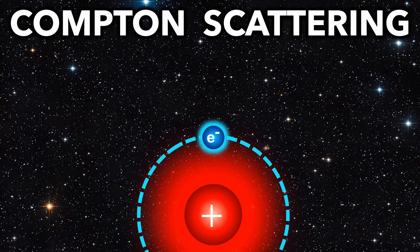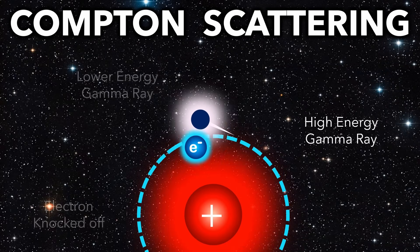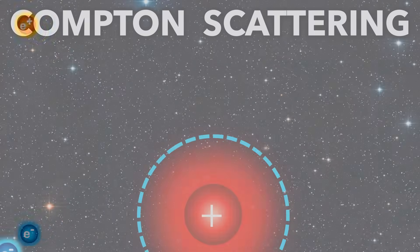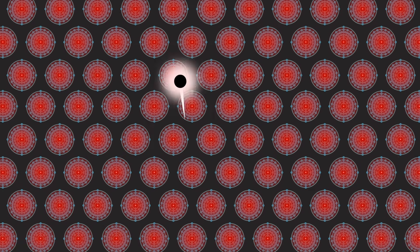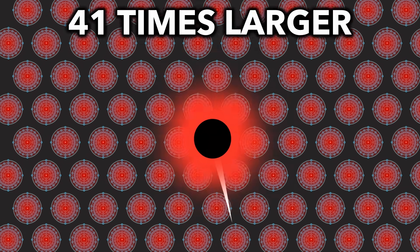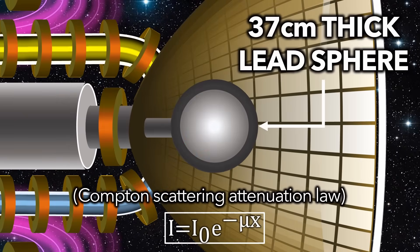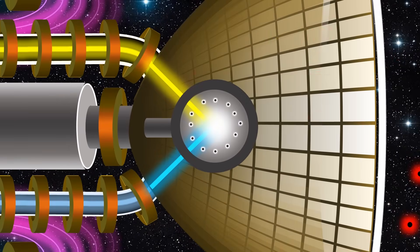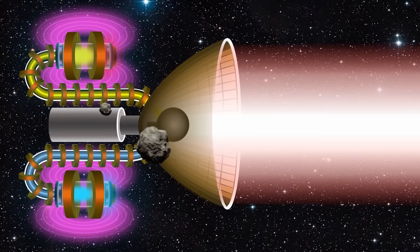Compton scattering. When gamma rays bounce off electrons in atoms, they lose some energy and become bigger. We can make our gamma rays exactly 41 times bigger by passing them through about 37cm of lead. Our gamma rays can now just about be reflected by our sail.